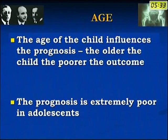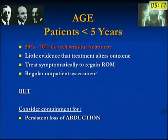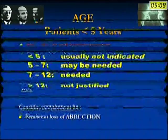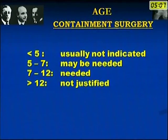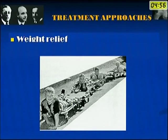The age of the child influences prognosis — the older the child, the poorer the outcome, and the prognosis is extremely poor in adolescence. Fifty to seventy percent of children below age 5 do well without active treatment or by supervised neglect. Consider containment for persistent loss of abduction, which may be due to lateral subluxation. In general, below 5 years containment surgery is not indicated; 5 to 7 years it may be needed; 7 to 12 years it is needed; and more than 12 years it is not justified.